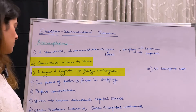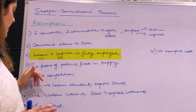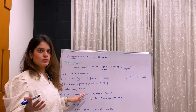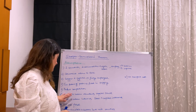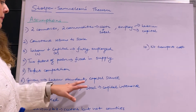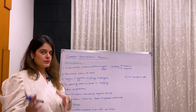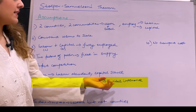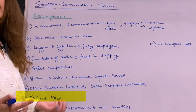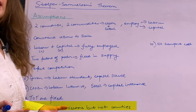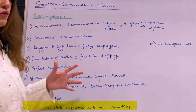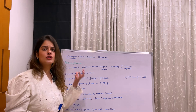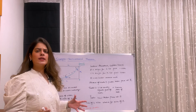Both labor and capital are fully employed and fixed in supply. There is perfect competition in both markets. The given country we are talking about is labor-abundant and capital-scarce — we can take our own country India as an example. Cloth is labor-intensive and steel is capital-intensive. The terms of trade are fixed. Factors are mobile between sectors but not between countries, and there is no transportation cost.